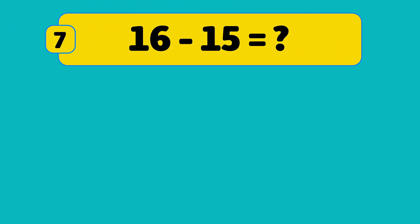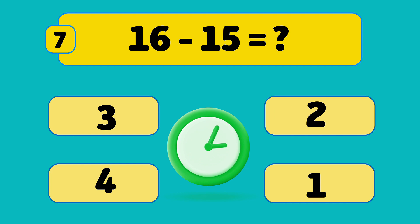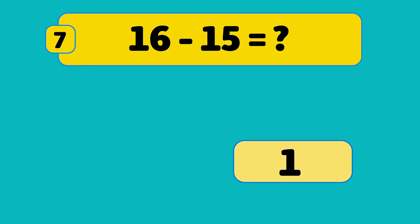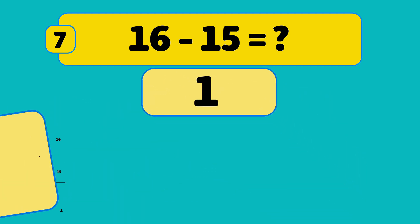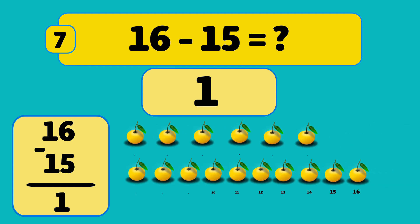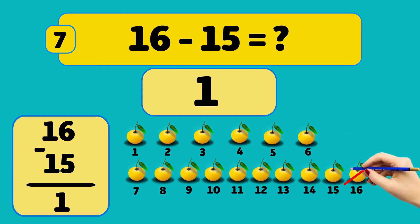What is sixteen minus fifteen? The answer is one. We start with sixteen oranges and remove them one by one: sixteen, fifteen.